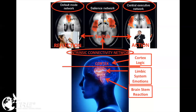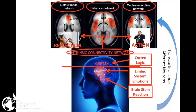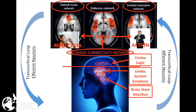To tie all of this together with the nervous system: when we do the exercises in TRE and activate the tremor mechanism, we also activate what's called the transcortical loop. There are afferent neurons in the body that send signals up to the brain through the nervous system, and then the nervous system responds from the brain with efferent neurons back into the body. This completes what we call the transcortical loop.